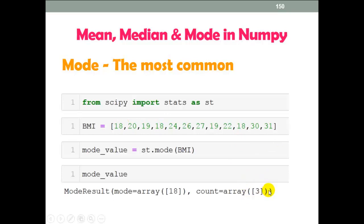So total count of 18 is 3. So output is 18, which is most common value in this sequence. Now let me show you this practically in the jupyter notebook.